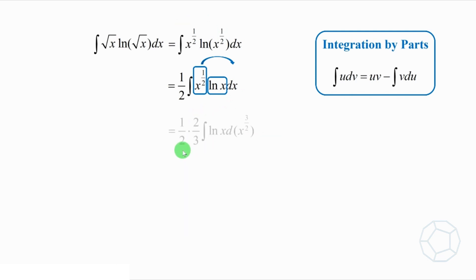Therefore, we have 1 over 2 times 2 over 3 times integrate log x bracket x to the power of 3 over 2. Here, we can cancel out the 2 to get the factor 1 over 3.